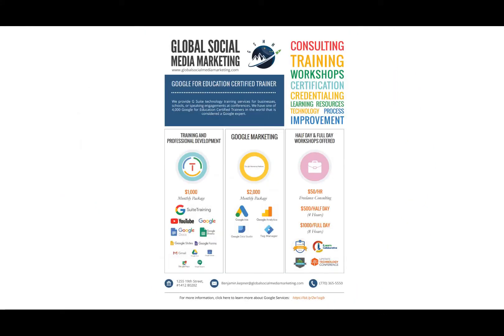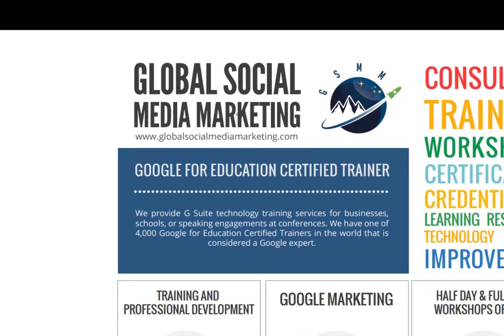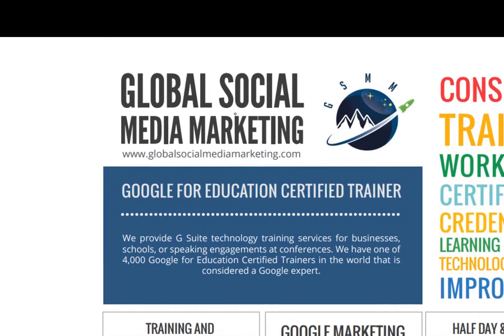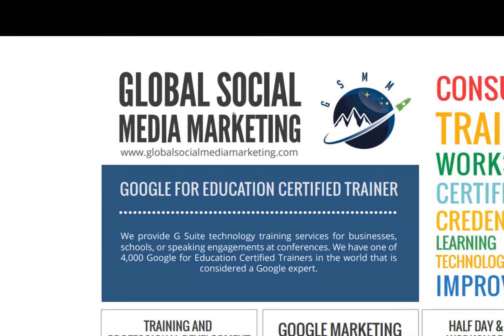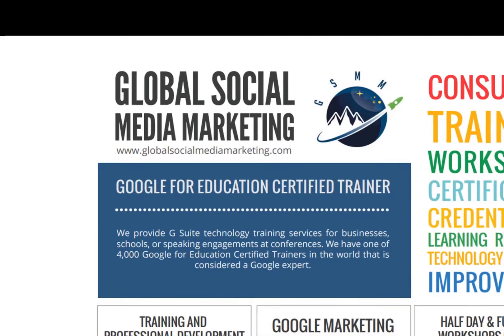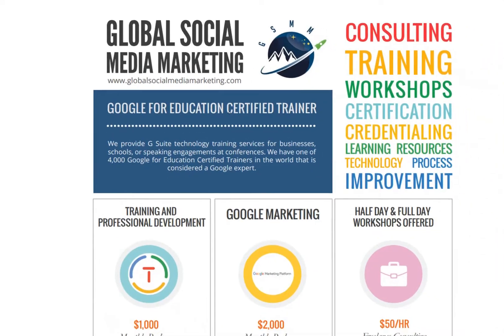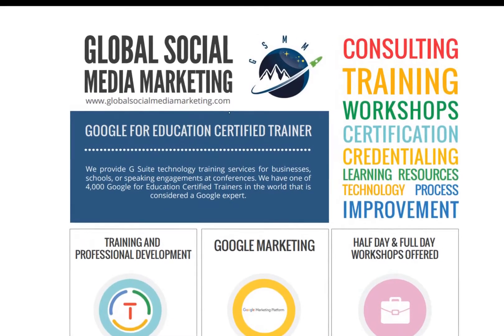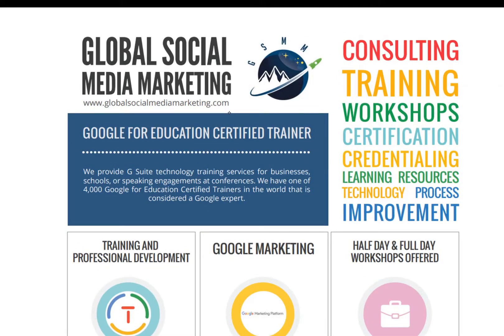Now I'll show you some examples of sales sheets. This is an example from Global Social Media Marketing, an award-winning marketing and education technology training company in Colorado that can help businesses connect to their audiences through social media marketing, education technology, and international business expansion. As you can see, the sales sheet is branded at the top so we know what company we're looking at. We have a benefit statement that reads: we provide G Suite technology training services for businesses, schools, or speaking engagements at conferences. We have one of 4,000 Google for Education certified trainers in the world that is considered a Google expert. All of this information at the top is differentiating ourselves from competitors and showing anyone looking at this sales sheet why our services are valuable.